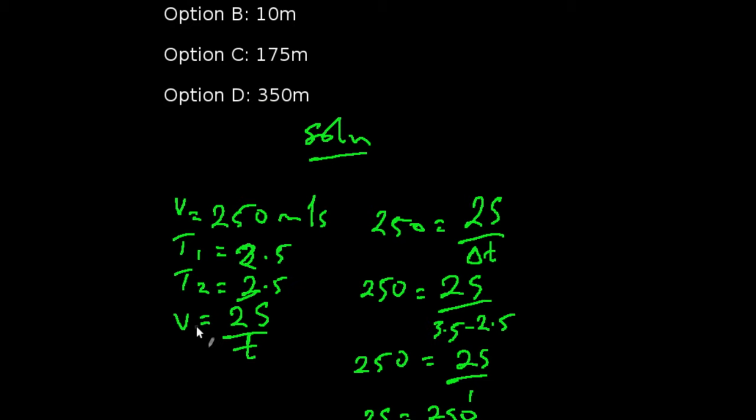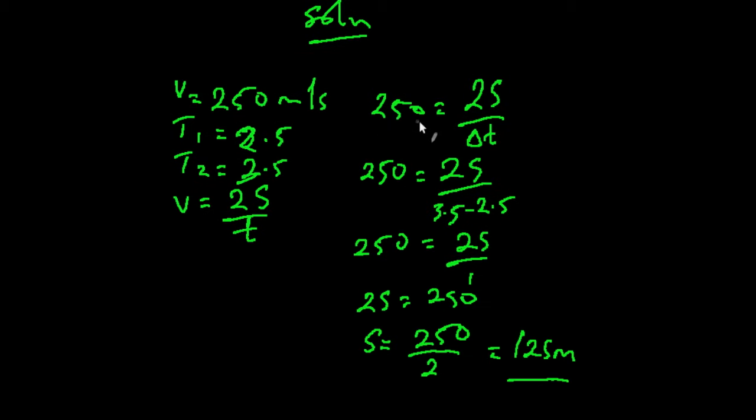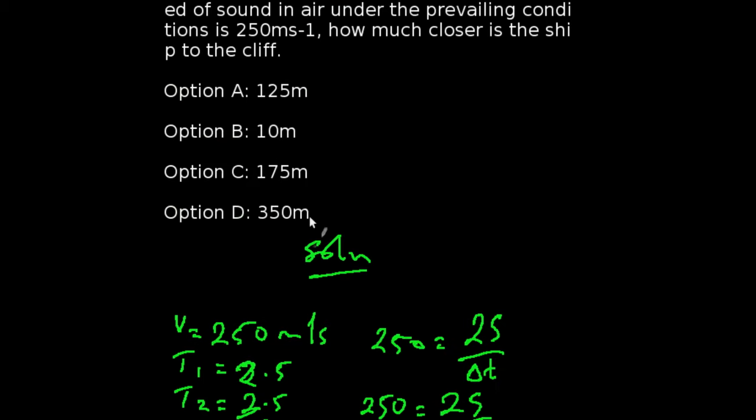We're going to be using the formula v, which is velocity is equal to 2s all over t, where s is our distance and t is our time. So, we have our v to be 250 is equal to 2s all over change in time. That will give us 250 is equal to 2s all over 3.5 minus 2.5. We'll be having 250 is equal to 2s all over 1. If we cross multiply, we're going to be having 250 times 1 is equal to 2s. That will give us 2s is equal to 250, and our s is equal to 250 all over 2, which will give us 125 meters. So, the correct answer to this question is option A, 125 meters.